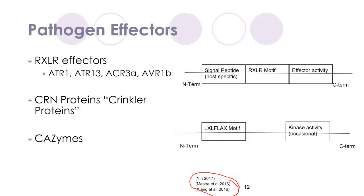Finally, there are a number of pathogen effectors that aid the pathogen in increasing its virulence against plants. First, RXLR effectors, including ATR1, ATR13, and several others, are similar to those found in pathogens causing potato blight. They are delivered into host cells and migrate into the nucleus, where they reduce the resistance of the plant to the pathogen by inhibiting the plant's pattern-triggered immunity, or PTI response. Furthermore, ATR1 and AVR1B inhibit programmed cell death, further decreasing the plant's resistance to the pathogen.